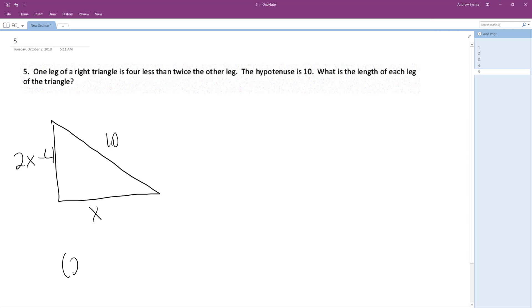So using the Pythagorean theorem, 2x minus 4 squared plus x squared equals ten squared.